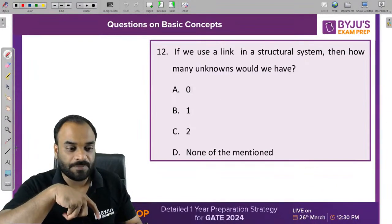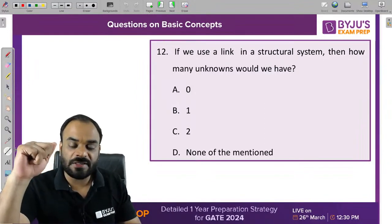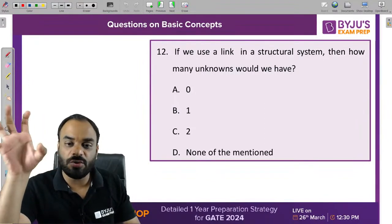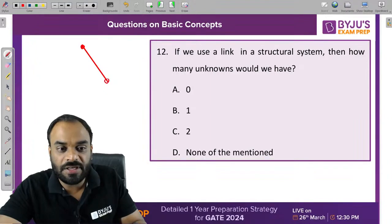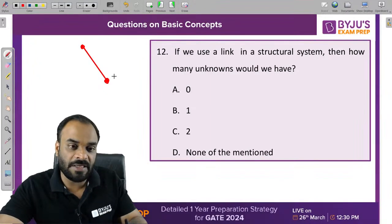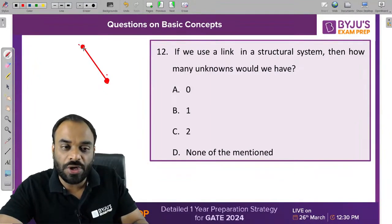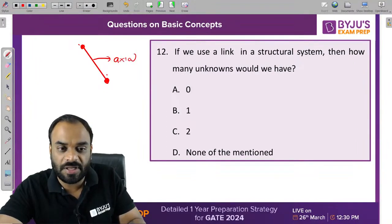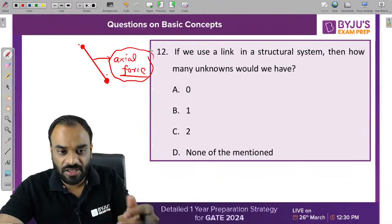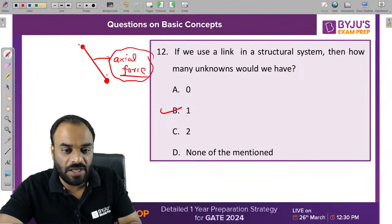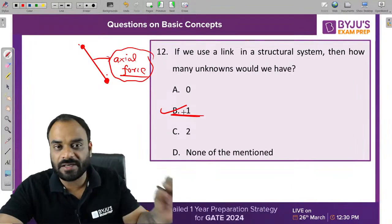If you use a link in a structural system, how many unknowns would there be? A link is a member connected to two hinges that can bear only axial force — either compression or tension. So there is only one unknown present due to the link condition. The correct answer is B.